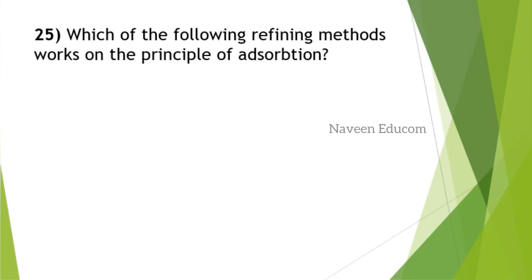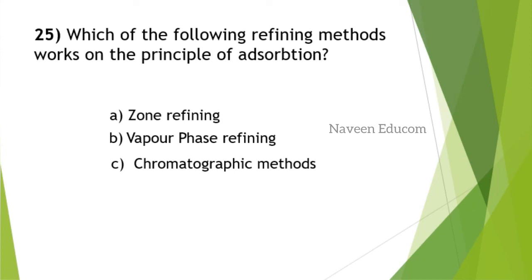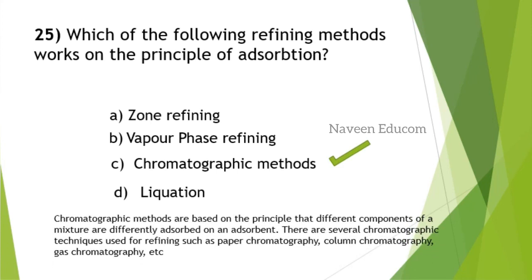Which of the following refining methods works on the principle of adsorption? Options are zone refining, vapor phase refining, chromatographic methods, liquation. The answer is chromatographic methods. You study this in chemistry at 12th level NCERT. Chromatographic methods - you have to know the different types: paper chromatography, column chromatography, gas chromatography, and the techniques used. This is the end of this section. We will continue in the next video part two. Please watch that video. Thank you.